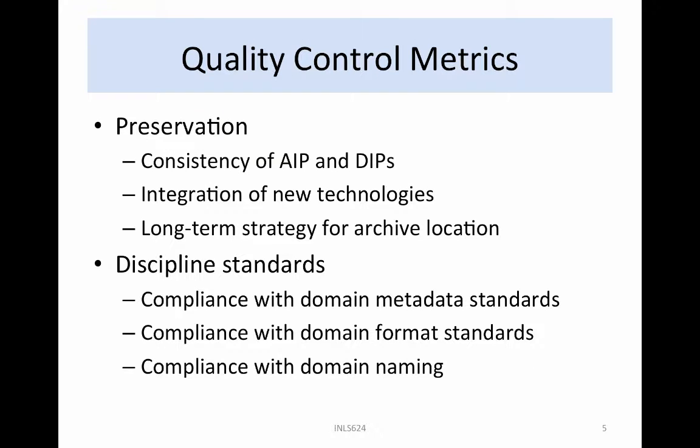Metrics can also be defined to track compliance with standards. Examples include preservation — the consistency of AIPs and DIPs, the number of new technologies integrated into the data grid, and the long-term strategy for archival storage of files. Discipline standards items include compliance with domain metadata standards, compliance with domain format standards, and compliance with domain naming.